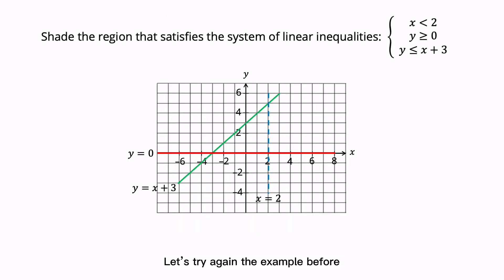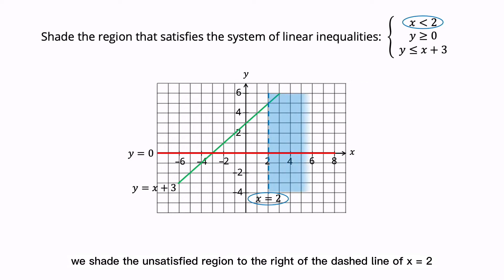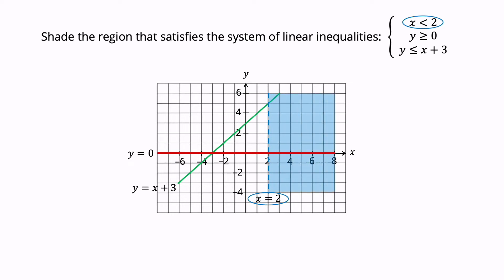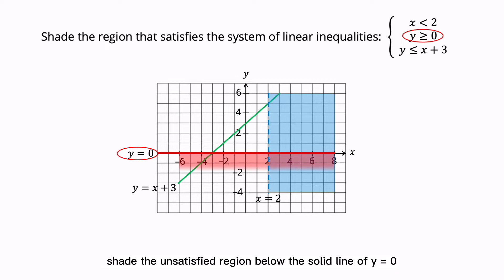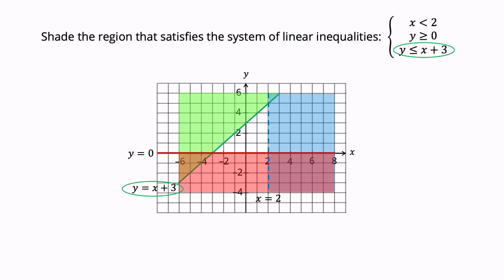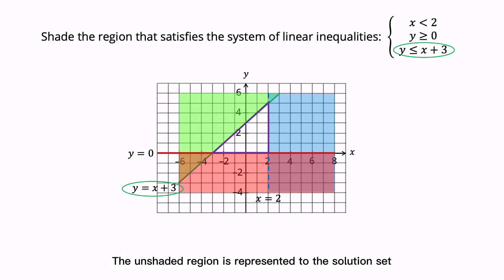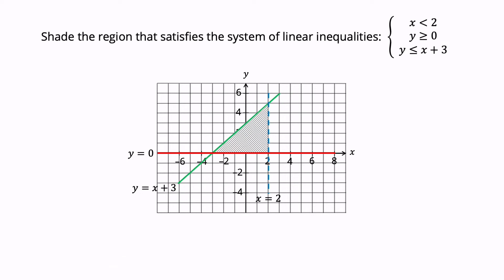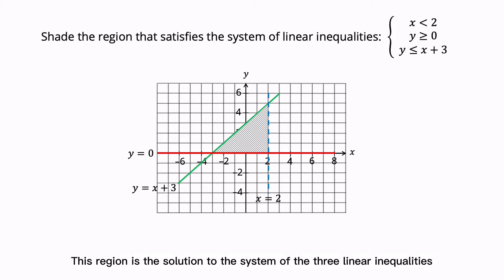Let's try the example again. For the linear inequality X less than 2, we shade the unsatisfied region to the right of the dashed line of X equals to 2. For the linear inequality Y greater than or equals to 0, shade the unsatisfied region below the solid line of Y equals to 0. And for the inequality Y less than or equals to X plus 3, we shade the unsatisfied region above the solid line. Now we can see clearly the solution to the system of the three linear inequalities. The unshaded region represents the solution set — all the solutions can be found in this region.